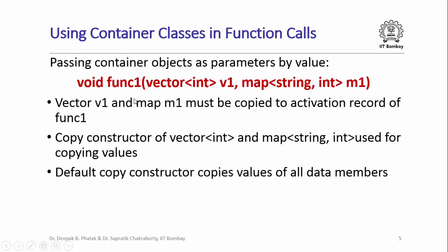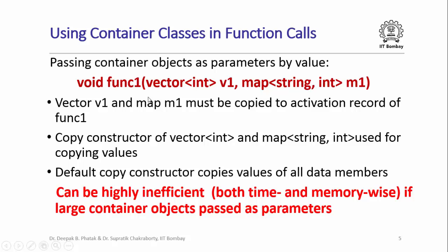How is this copying going to get done? It will be achieved by invoking the copy constructor of vector instantiated with int, and of map instantiated with string and int. The default copy constructors are simply going to copy the values of all data members of the object being passed as parameter to the activation record of func1. All the integers in the vector will be copied element by element, and every key-value pair in the map will be copied key-value pair by key-value pair. This process can be highly inefficient both time and memory wise if the container objects being passed are large.